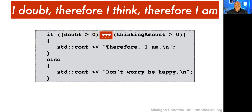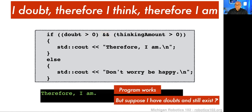In order for our program to assert this statement about its existence, we know that both things have to be true — it has to have doubt AND it has to be thinking. So we add those together with AND, and we run our program. It works. If I have doubt and I'm thinking, and both of those are greater than zero, then my program works.